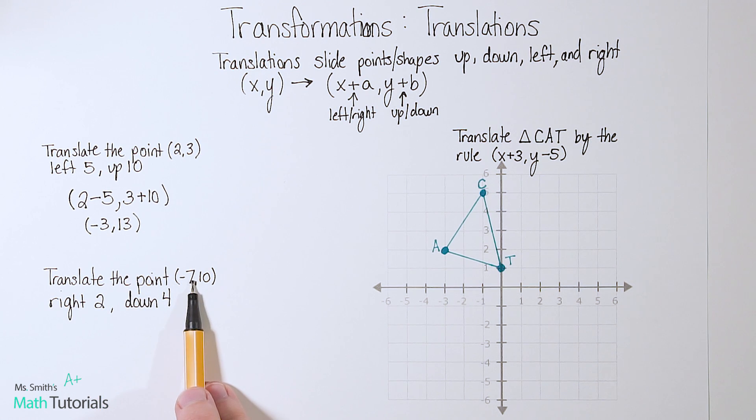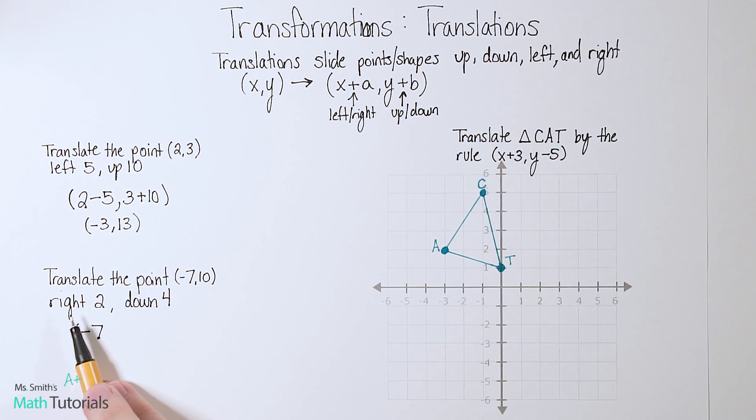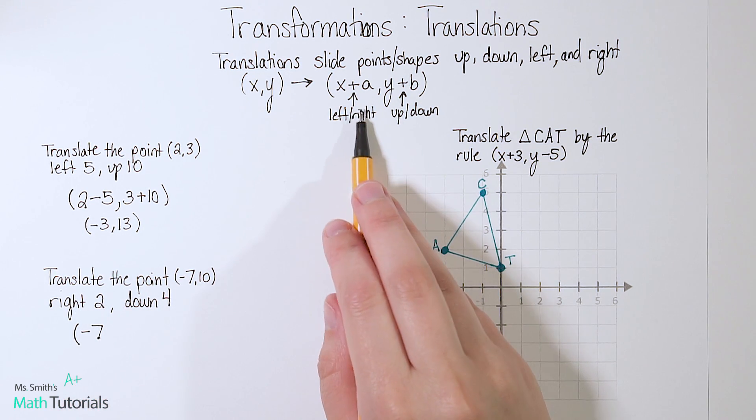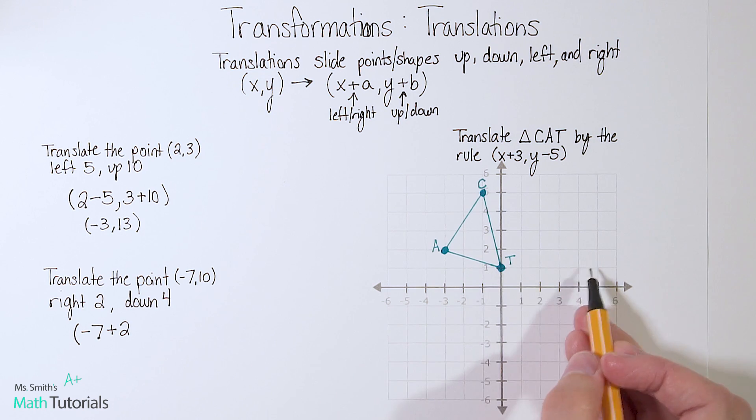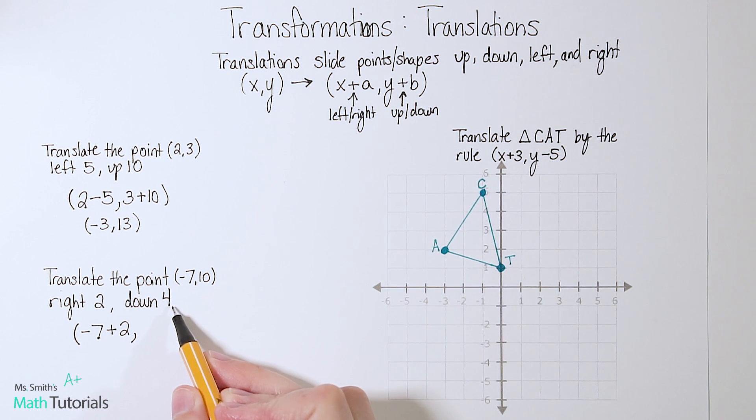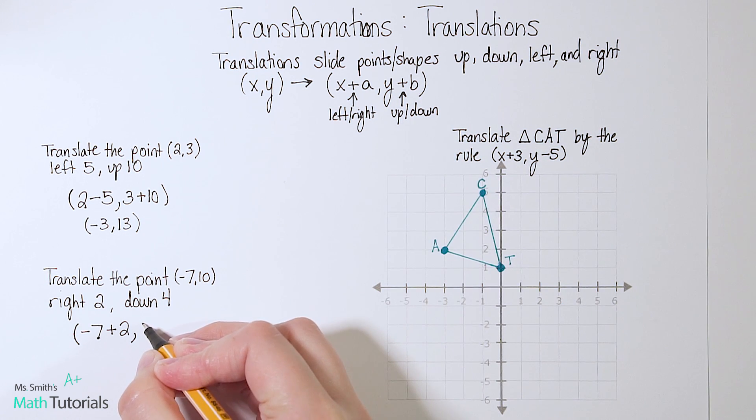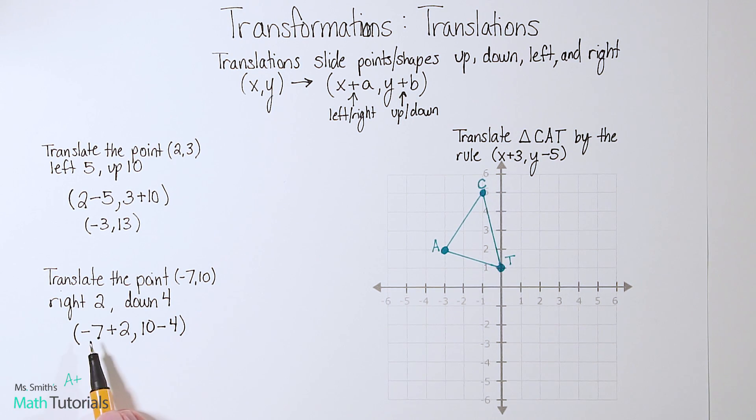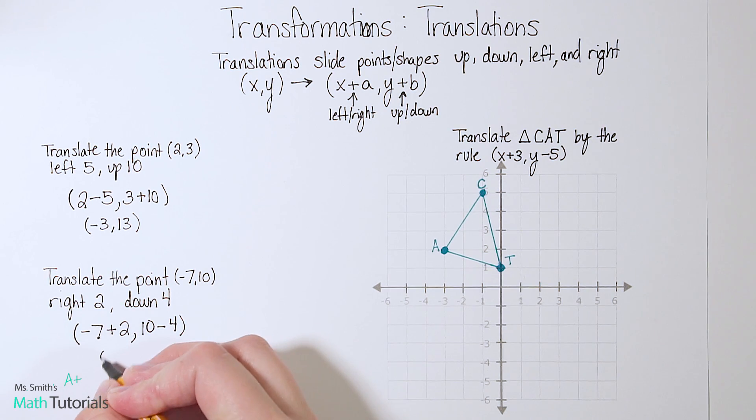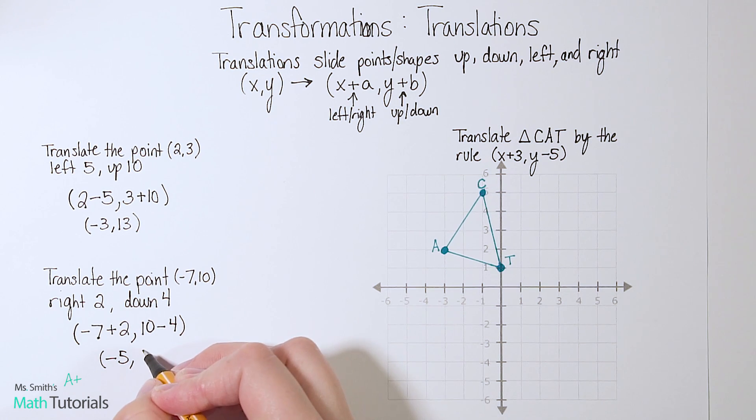Let's look at this one. Translate the point (-7,10) right 2, down 4. So we're going to take that original point starting with negative 7. And if we're going to move right 2, that's our x, and right is going to be the positive version, so plus 2. We want it to go 2 this way. And down 4, well that's going to be our y value, and we want it to go down, so we'll say minus 4. So in this case, negative 7 plus 2, that's going to give me negative 5, and 10 minus 4, that's going to give me 6.